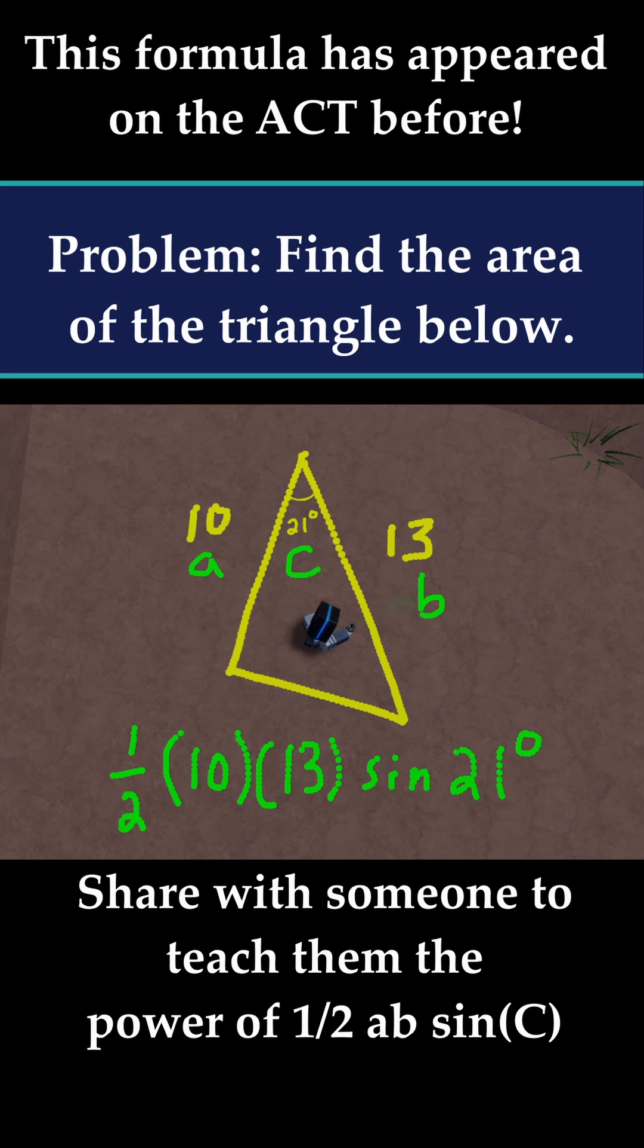And now you just need to compute this on a calculator. So take out a calculator and do 1 half times 10 times 13 times sine of 21. Make sure your calculator is in degrees and not radians, and then that'll give you the answer.